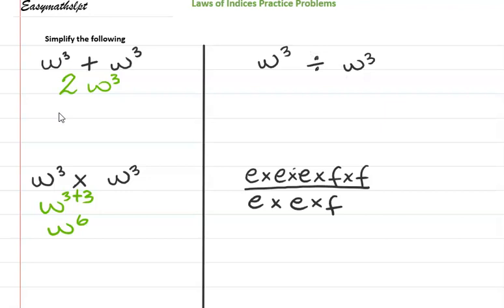In this one we're dividing same bases so we subtract the powers, giving us w to the three minus three, which is w to the zero power. And we know that anything raised to the zero power is one, so this simplifies to one.